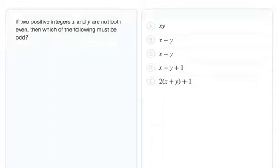Before solving this question, let's take a look at what the question is asking. We're told that if two positive integers x and y are not both even, then which of the following must be odd?